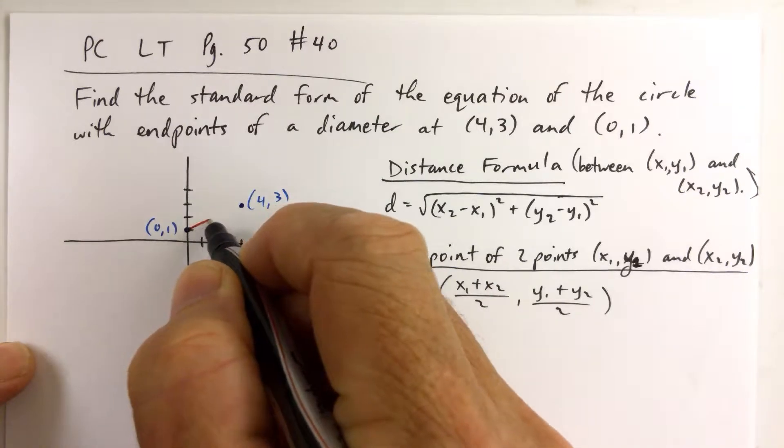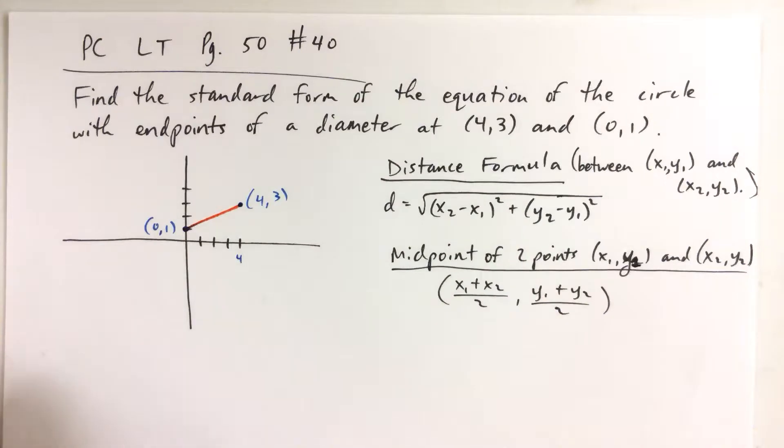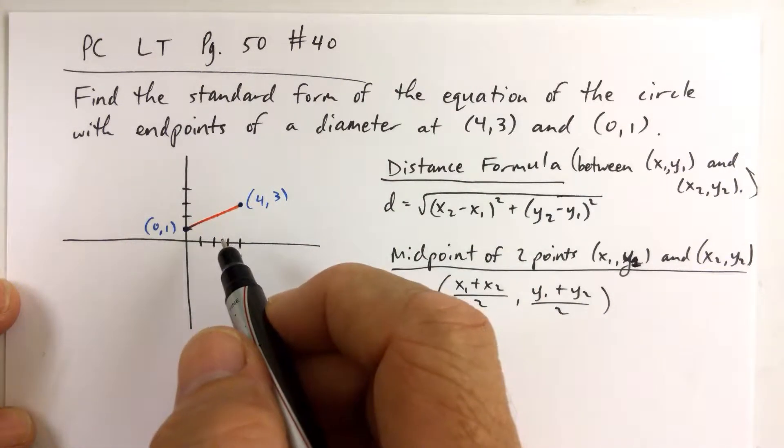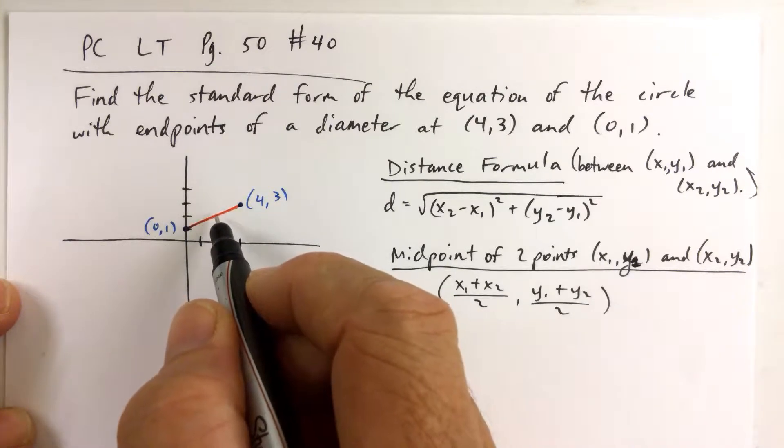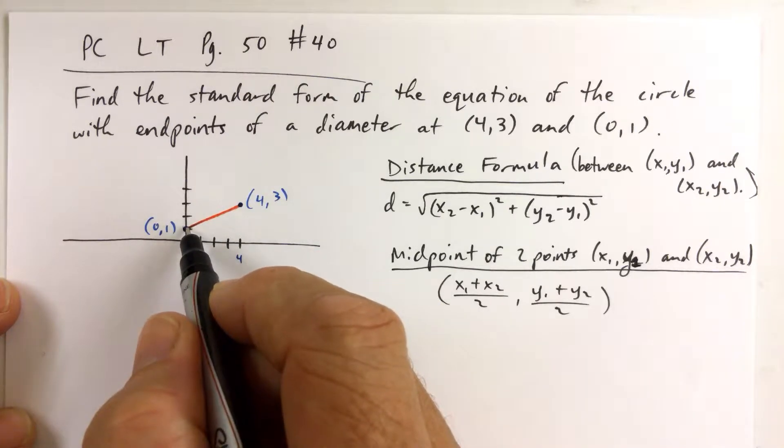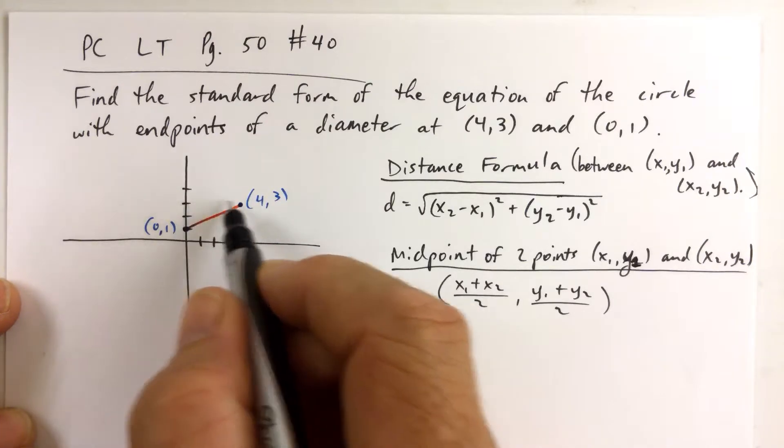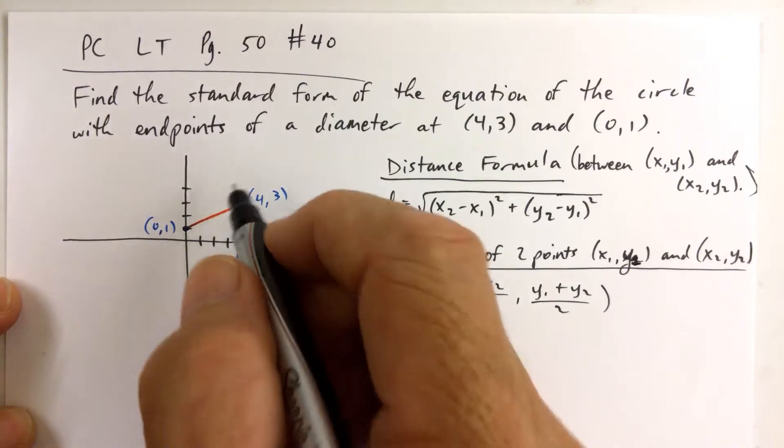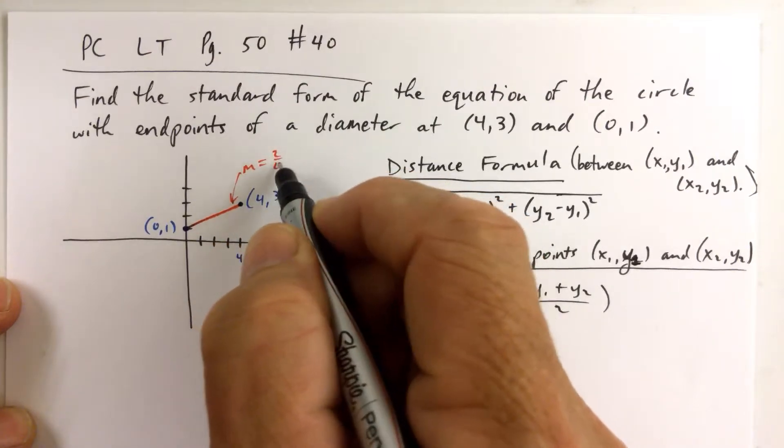Knowing that these two points are at the ends of a diameter, we know that the diameter is a straight line. If we look here, we can go up 2 and over 1, 2, 3, 4. So if we go up 2 and over 4, the slope of the line is up 2 and over 4, which is 1/2.